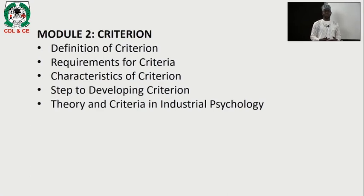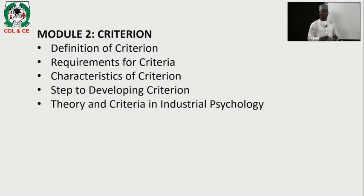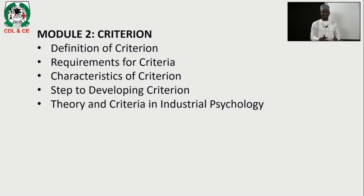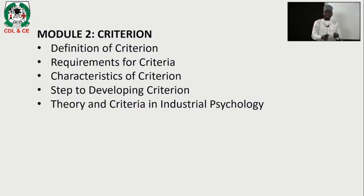Furthermore, we are going to look at criterion. Criterion is basically the standard for evaluation of a job — how well a job is done, how we define success. Success means different things to different people, so criterion looks at how we say a job is well done, how profit is maximized, how sales are at their optimal level, and how employee performance is at its best. Criterion is the standard that helps us understand that a job is well done, and it is set for people management as well as theory.